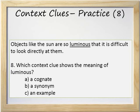Number 8: Which context clue shows the meaning of luminous? A. A cognate. B. A synonym. Or C. An example. Let's reread the sentence: Objects like the sun are so luminous that it is difficult to look directly at them. Do you see a cognate, a synonym, or an example? The answer is C. An example. The example that we see is the sun. The sun is an example of a thing that is luminous, from which we can guess it is very light and therefore difficult to look at.